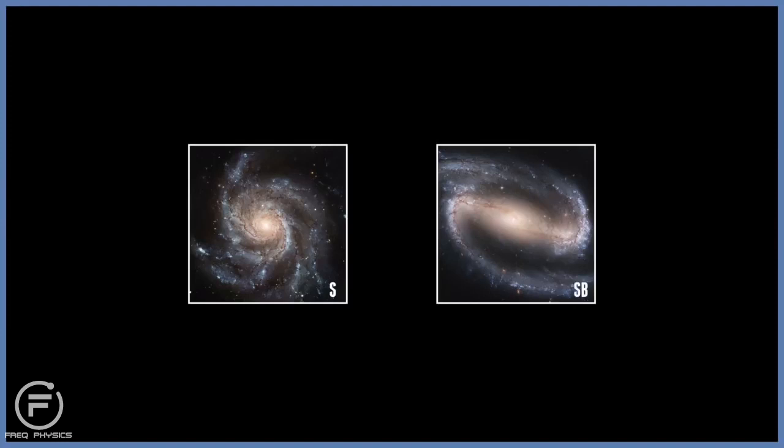Spiral galaxies, on the other hand, are divided into two main types. Regular spirals, which are denoted with the letter S, and the barred spiral galaxies, which are marked SB. The regular spirals basically have arms that spiral inwards into the galactic center, whereas the barred spirals seem to have a bar shape in the center, and from this the arms seem to extend out.